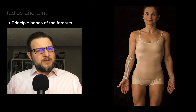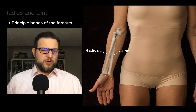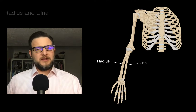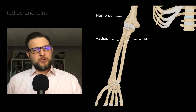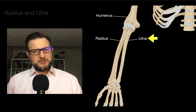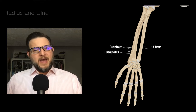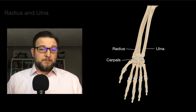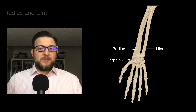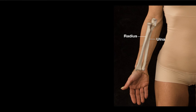The radius and ulna form the principal bones of the forearm. They articulate proximally with the humerus at the elbow joint, with the primary articulation being with the ulna and humerus. Distally, the radius and ulna articulate with the carpals or the wrist bones, and the radius forms the dominant role of articulation with the wrist.